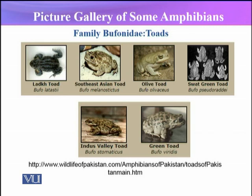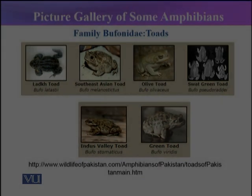Toads are comparatively rough textured and frogs are comparatively smoother. This pattern comes from their skin — frogs have comparatively smoother skin, while the toads have a rough texture.